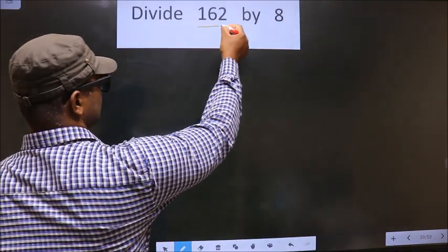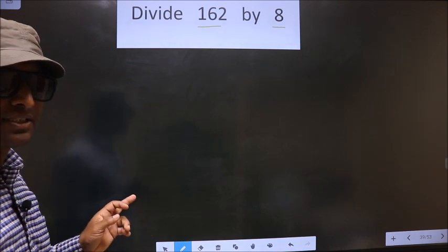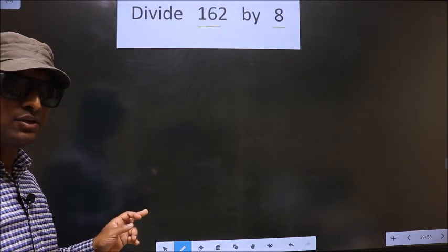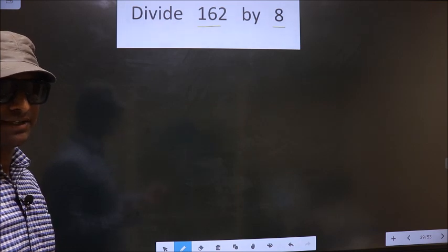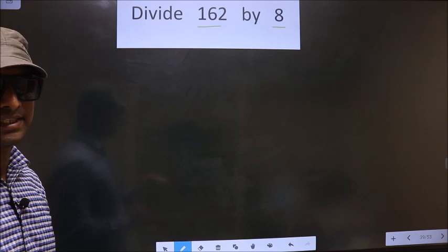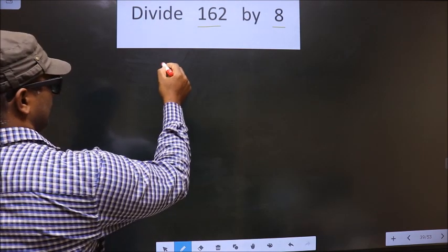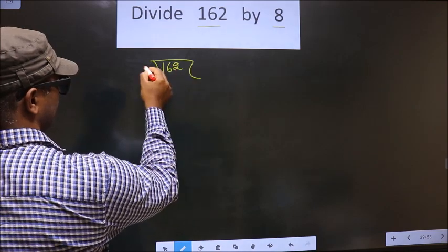Divide 162 by 8. While doing this division, many do the mistake. What mistake do they do? I will tell. But before that, first we should frame it in this way. That is 162 by 8.